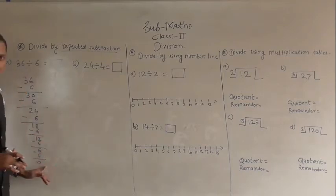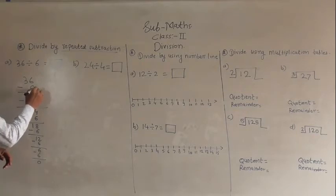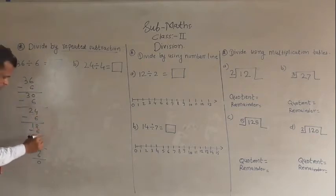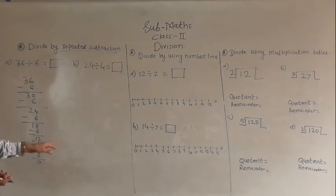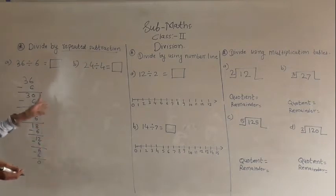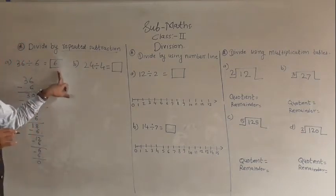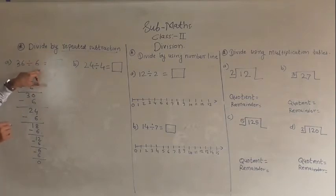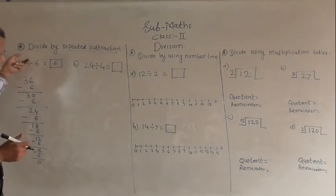When 0 comes, stop your process and count how many times you subtracted 6: 1, 2, 3, 4, 5, and 6 times. So you get 0 as the remainder. 6 is our answer. You can cross-check your answer: 6 sixes are 36, so our answer is correct.